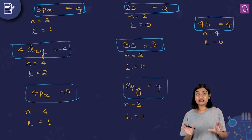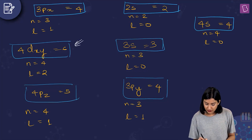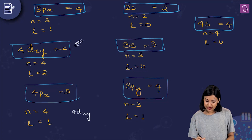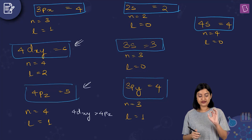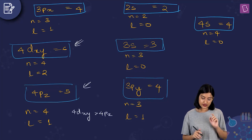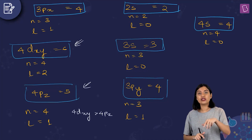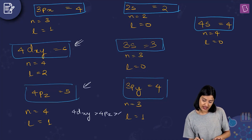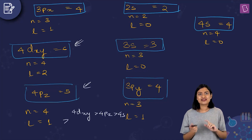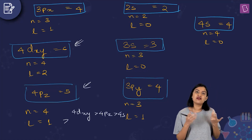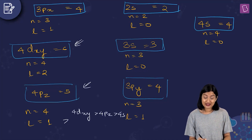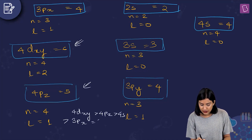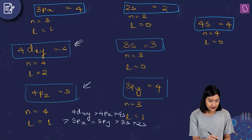The highest n+l is 6, so 4dxy has maximum energy, followed by 4pz (n+l=5). For n+l=4, we have 3px, 3py, and 4s — since 4s has the highest n among these, it has higher energy. Between 3px and 3py, they have identical n, l, and n+l values, making them degenerate orbitals with equal energy. Then 3s, then 2s.